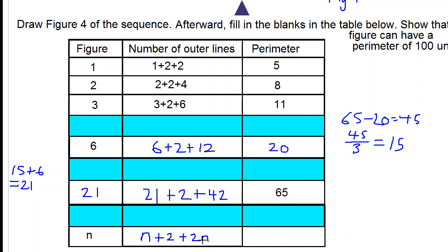To figure out the perimeter, we simplify the expression from before, so two n plus n is three n plus two, so we have filled all of our blanks in our table.